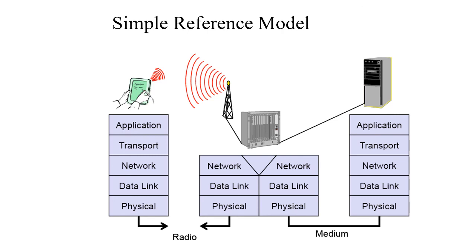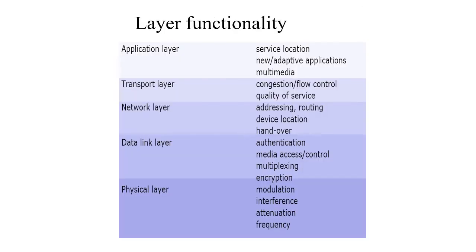Communication can be from mobile to mobile, from a mobile to a desktop, or from a mobile to a wirelessly connected laptop. This is the simple reference model we will explore in future classes. These five layers apply on either side. In the physical layer, we talk about modulation, interference, attenuation, and frequency of the device in the mobile environment.